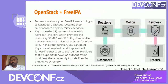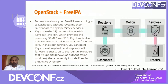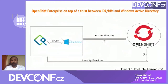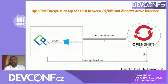For OpenStack plus FreeIPA: Keystone is your service provider and Keycloak is your identity provider. With this setup you can access the dashboard without directly revealing your credentials — OpenStack and FreeIPA integration is quite possible. For OpenShift: if you already have an IPA and AD trust in your environment, you can leverage it to access OpenShift as well.